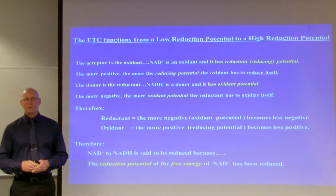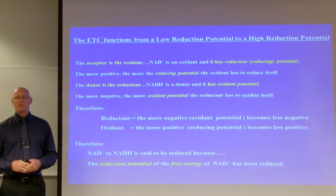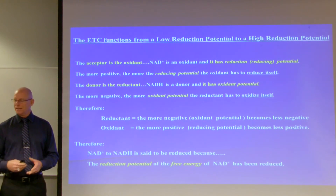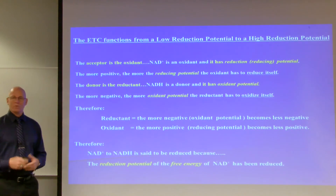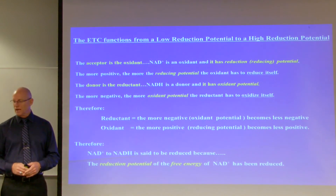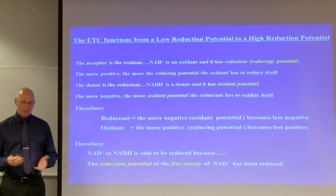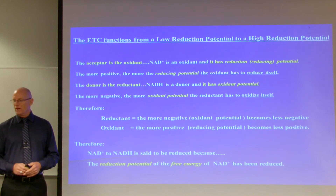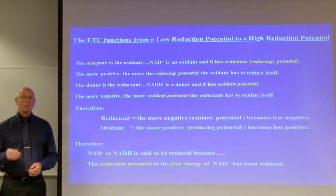The premise of the electron transport chain is that it functions from a low reduction potential to a high reduction potential. The acceptor is the oxidant. NAD positive, the oxidized form of nicotinamide adenine dinucleotide, is an oxidant and it has reduction potential — or reducing potential, they both mean the same thing. The more positive, the more reducing potential the oxidant has to reduce itself.